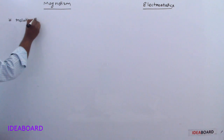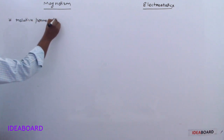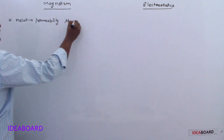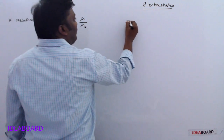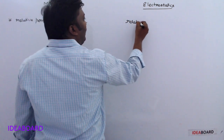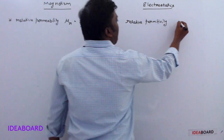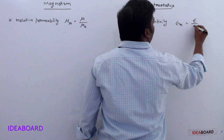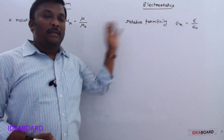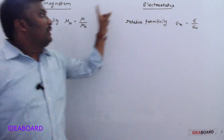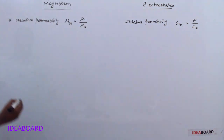Relative permeability, symbol μᵣ, is equal to μ/μ₀. The analogous quantity in electrostatics is relative permittivity, εᵣ = ε/ε₀. Please note: μ is simply replaced by ε in the analogous formula.